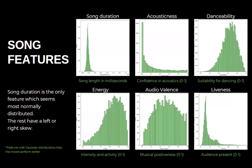Here are just a few of the variables I use to predict song popularity. Song duration is normally distributed. Other features like danceability, acousticness, and audio valence are a score between 0 and 1.